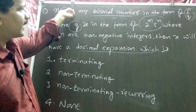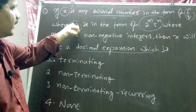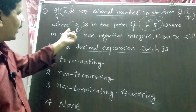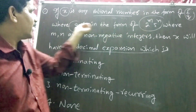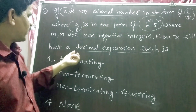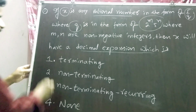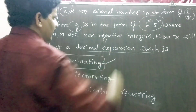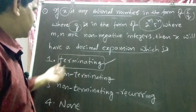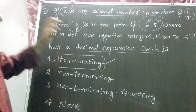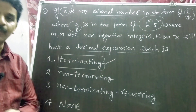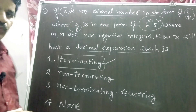Given that X is a rational number in the form of P by Q, where the denominator Q is in the form of 2^m × 5^n — meaning the denominator has a factor of 2 or 5 or both — that rational number will have a decimal expansion which is terminating. Whenever the denominator has factors other than 2 or 5, they are non-terminating and repeating. Therefore the answer is terminating.